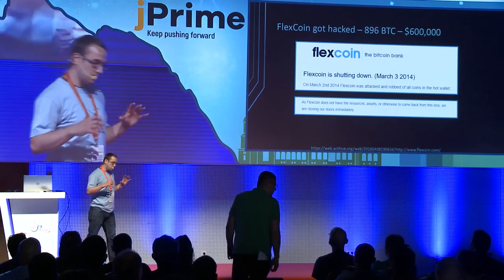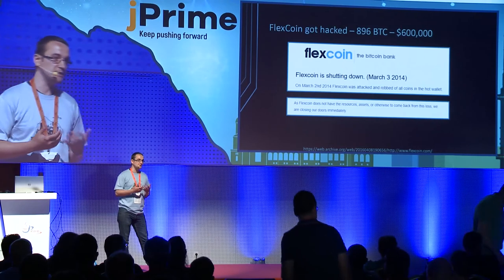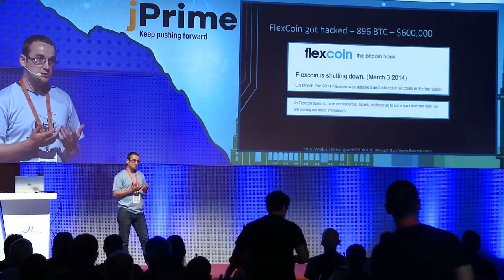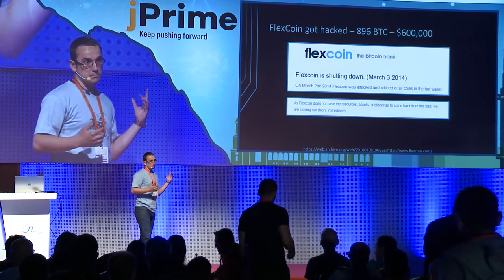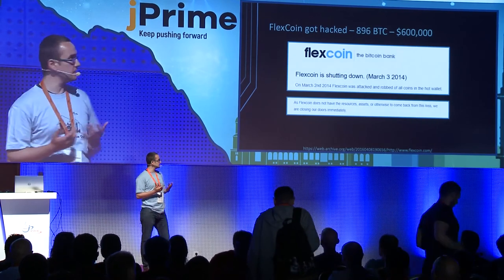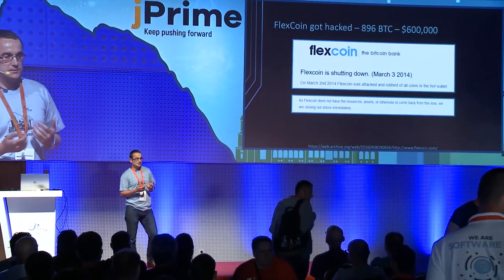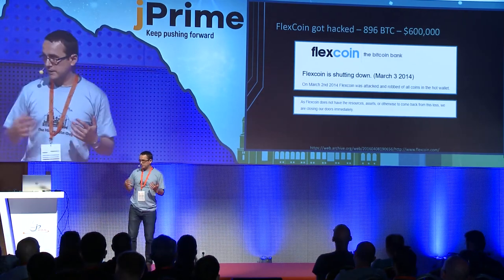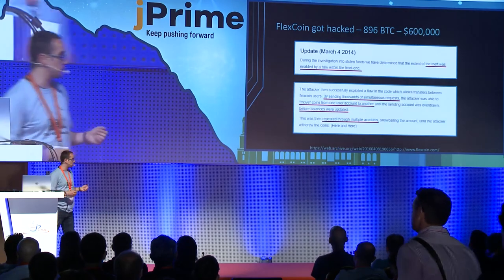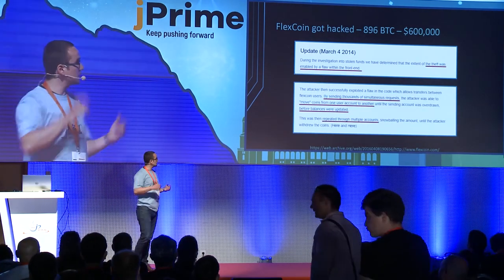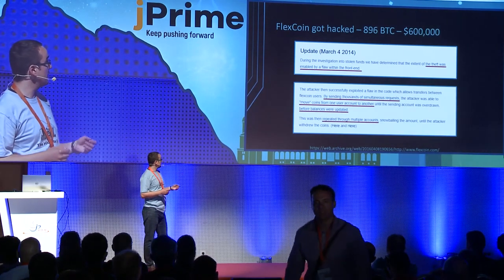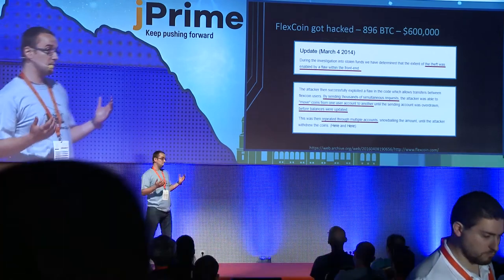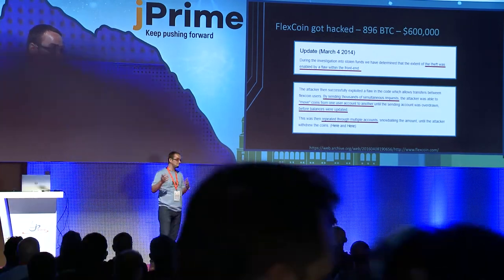When you're thinking about security, the lack of security can lead to your application getting hacked and losing money. However, few people realize that that can happen also because of lack of proper concurrency control. There was Flexcoin, which used to be an e-wallet for Bitcoins. In 2014, it got hacked, so they had to shut down because they lost all their Bitcoins in their exchange — around $600,000.